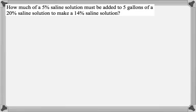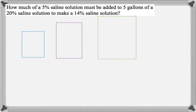We want to know how much of a 5% saline solution must be added to 5 gallons of a 20% saline solution to make a 14% saline solution. So we're trying to dilute the saline solution. I'm going to start with a picture of 3 tubs of saline. They're going to look like rectangles because I'm not very artistic.